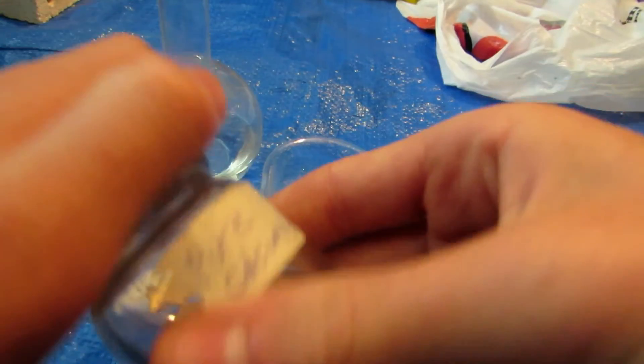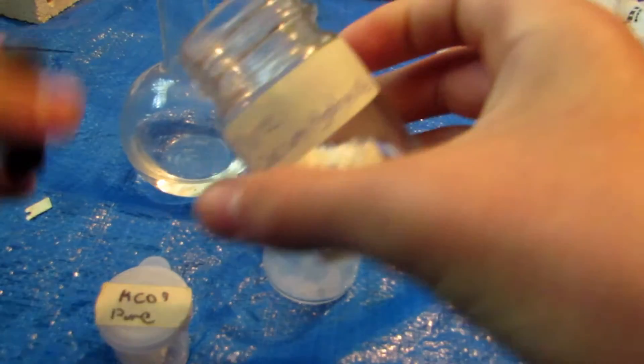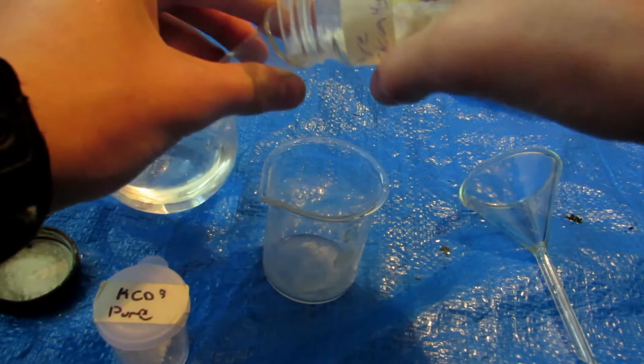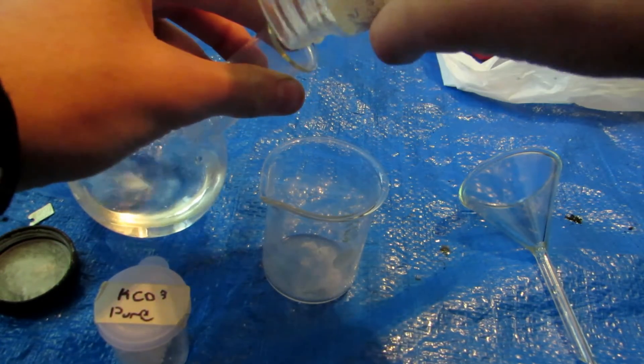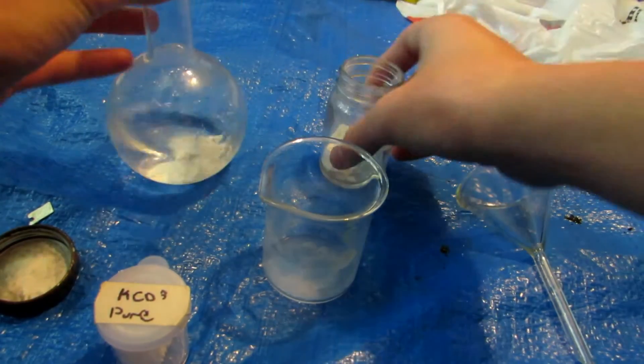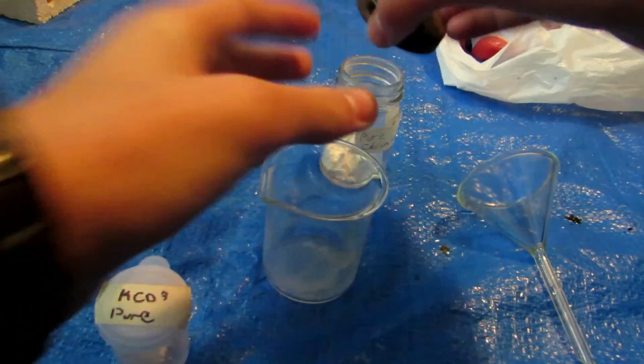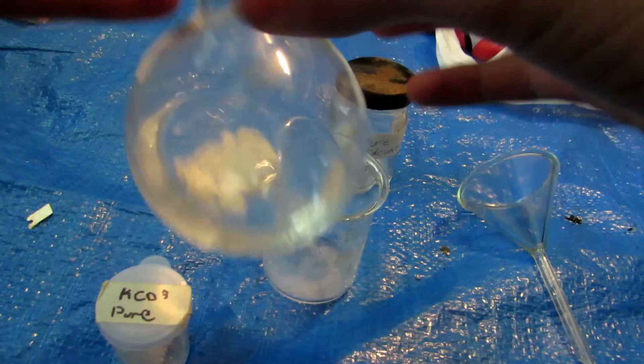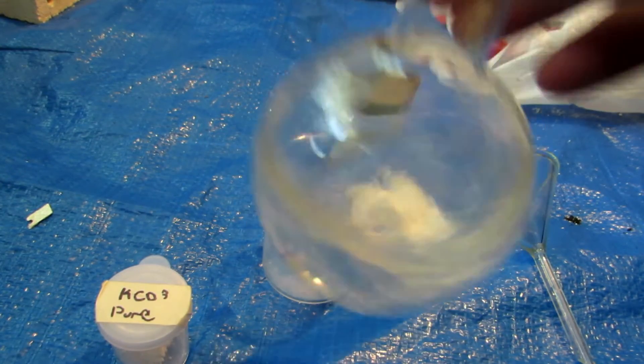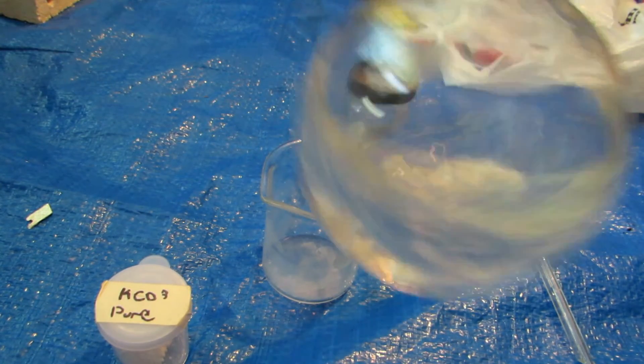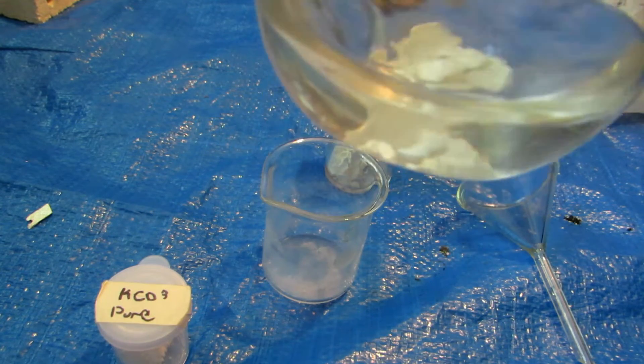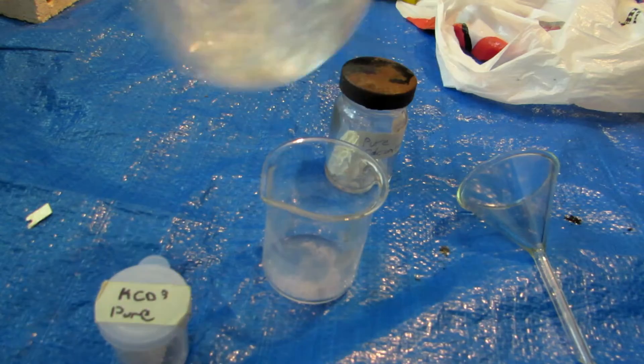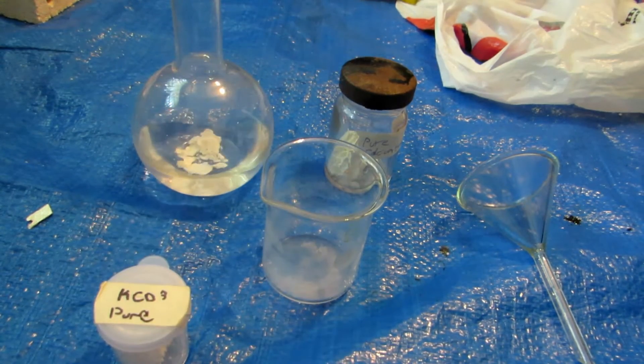So first step we're going to do is simply take some of our calcium hydroxide here and just pour it into our round bottom flask with a flat bottom of course so it will stand. You can use any sort of container, even something like a canning jar or something.